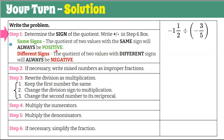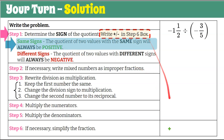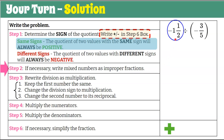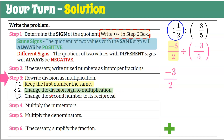Step two: if necessary, write mixed numbers as improper fractions — necessary here. Our first value is a mixed number: two times one is two plus one is three, so negative three over two. Keep our second value the same — negative three-fifths. Step three: rewrite division as multiplication. Keep the first number the same — negative three-halves. Change division to multiplication. Change the second number to its reciprocal: negative three-fifths flipped is negative five-thirds, keeping the sign with the numerator.